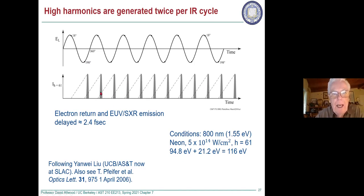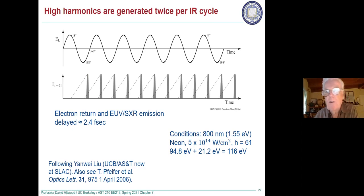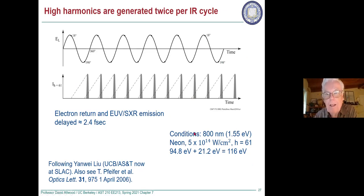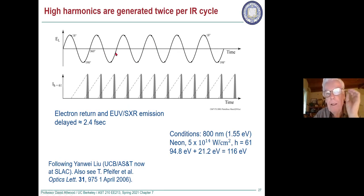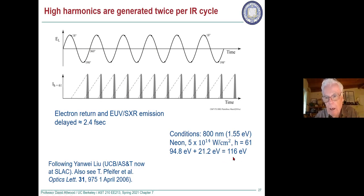If you did a Fourier transform of that symmetric pulse structure, you would see that you only get odd harmonics out of this — that's all you can get. The only way to get even harmonics is if the symmetry in time is broken. Some people do that by mixing in not only 800 nm but a little 400 nm by doubling a portion of the laser. So you're going to produce a wave train of pulses where the maximum highest-energy photons are 116 eV.